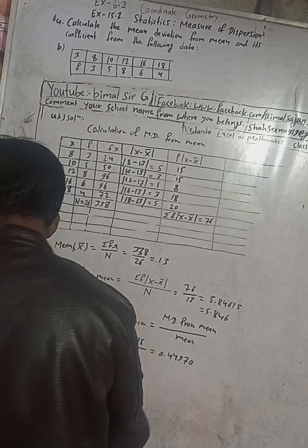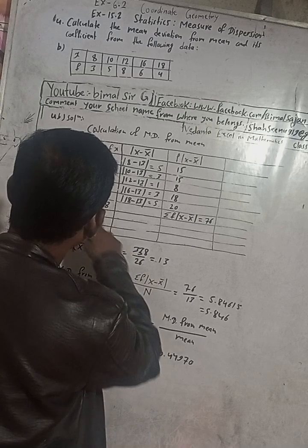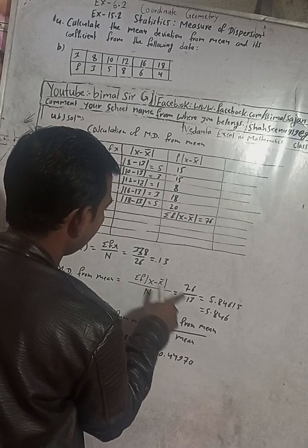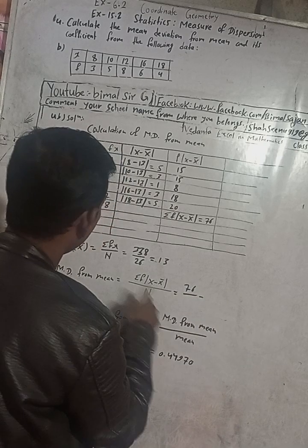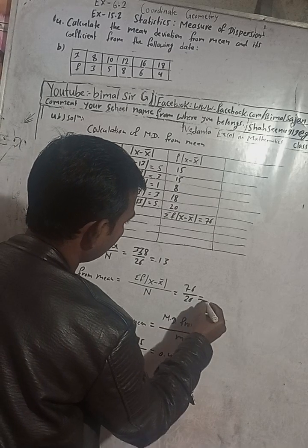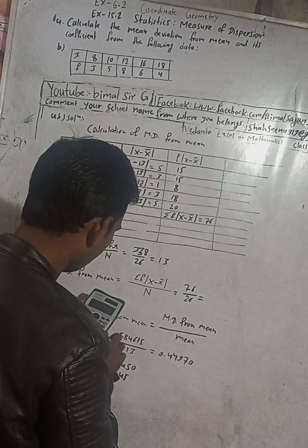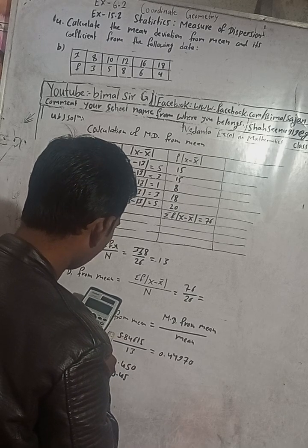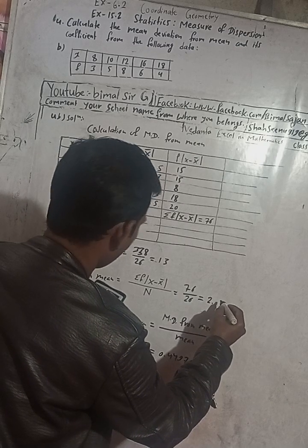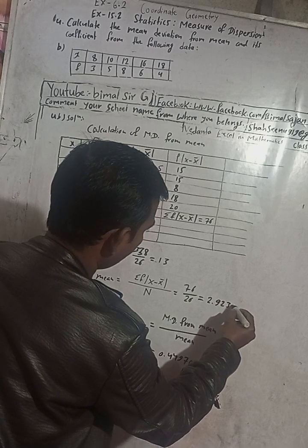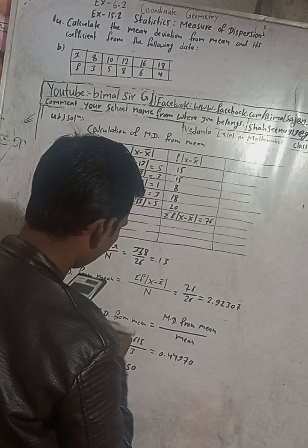Sorry, we made a mistake here. N is 26, but we mistakenly used 13. So the correct calculation is 76 divided by 26, which gives us 2.9230. This is the correct mean deviation from mean.